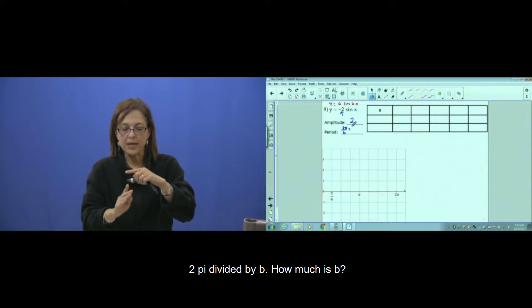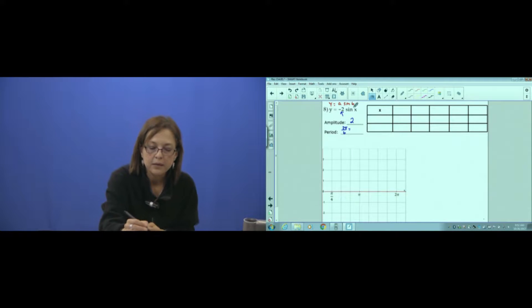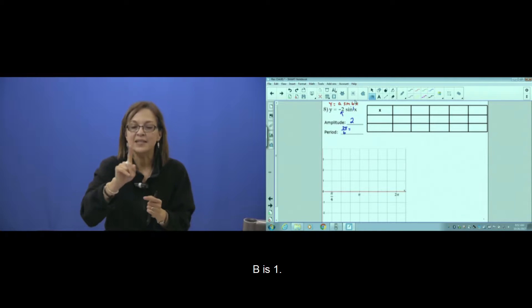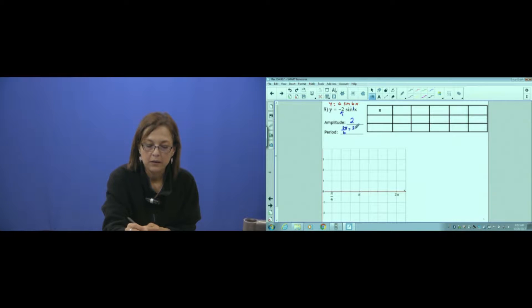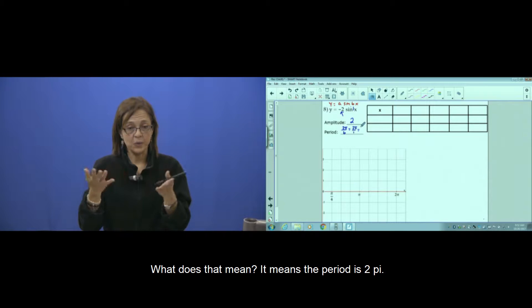2π divided by b. How much is b? b is 1. Means what? Period is 2π.